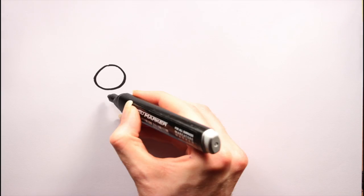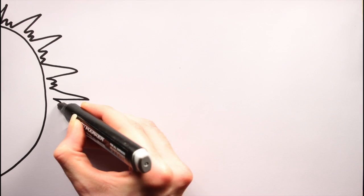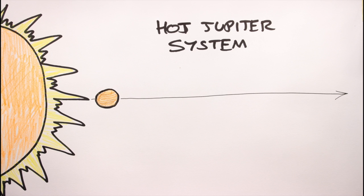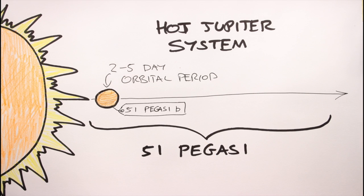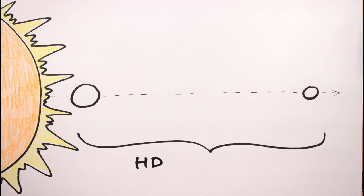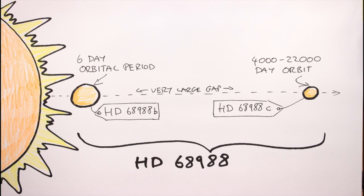Hot Jupiter Systems. One of the first types of planetary systems detected by astronomers was the so-called Hot Jupiter System. Here, a Jupiter-like planet orbits extremely closely to its host star, so close that a year on these Hot Jupiters usually lasts about two to five Earth days. Hot Jupiter systems, for the most part, tend to be one-planet systems like the 51 Pegasi system. But when they do feature multiple planets, there tends to be a massive gap between the inner Hot Jupiter and any other planets further out. This can be seen in the HD-68988 system, where the inner Hot Jupiter zips around the star every six days, but the outer planet takes anywhere between 4,000 and 22,000 days to complete a single orbit.